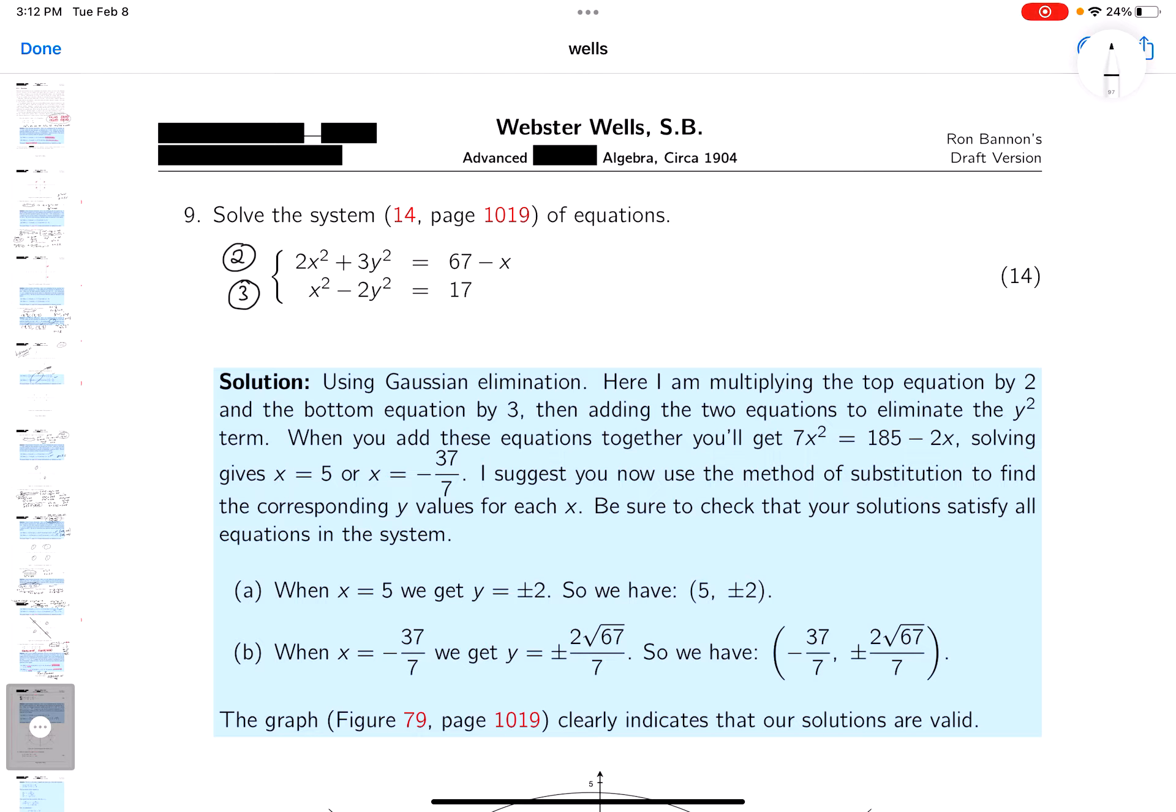You're going to get 2 times 2 is 4, plus 3, which is 7x squared. Then you're going to get 6y squared minus 6y squared. Well, they're gone.